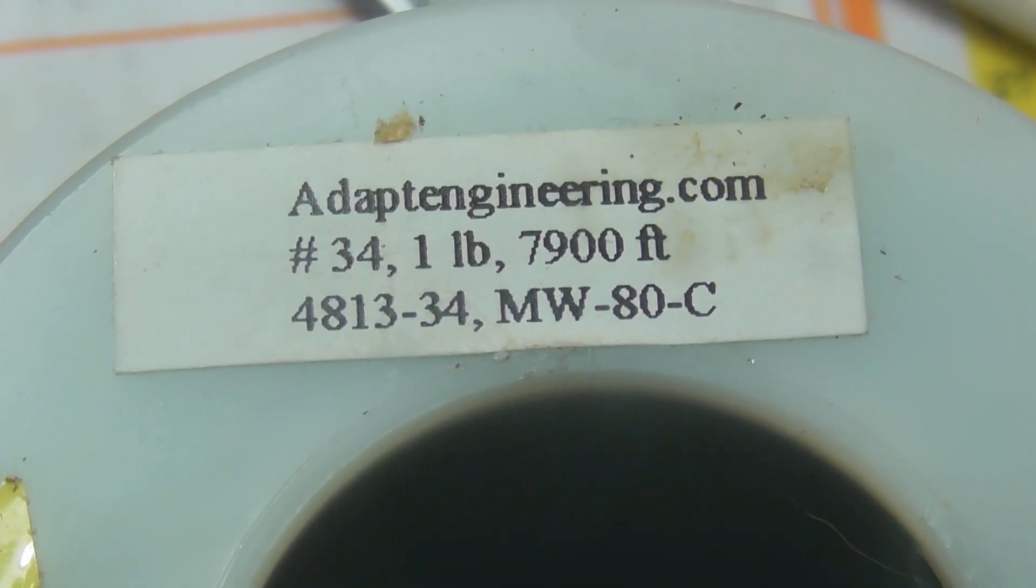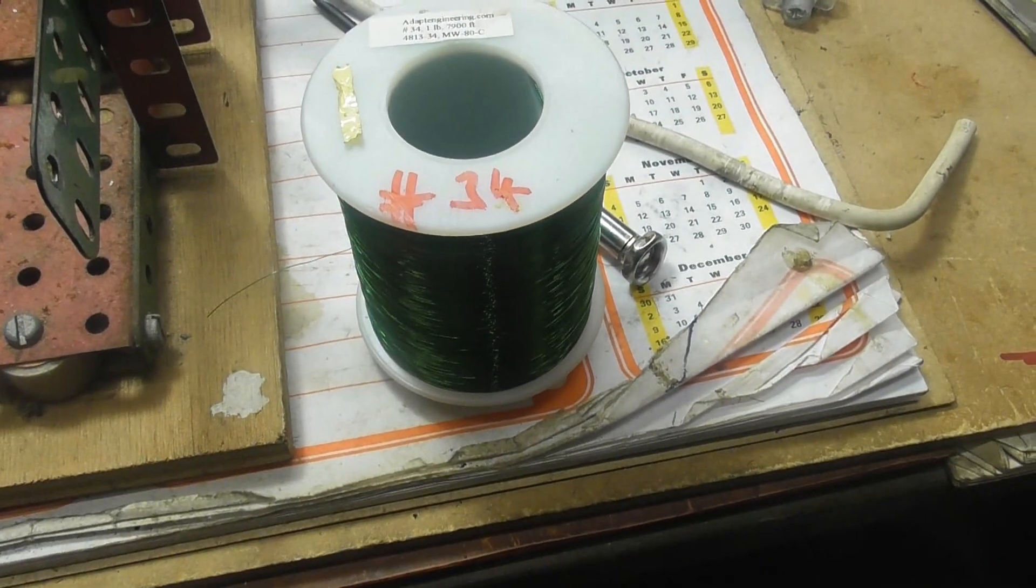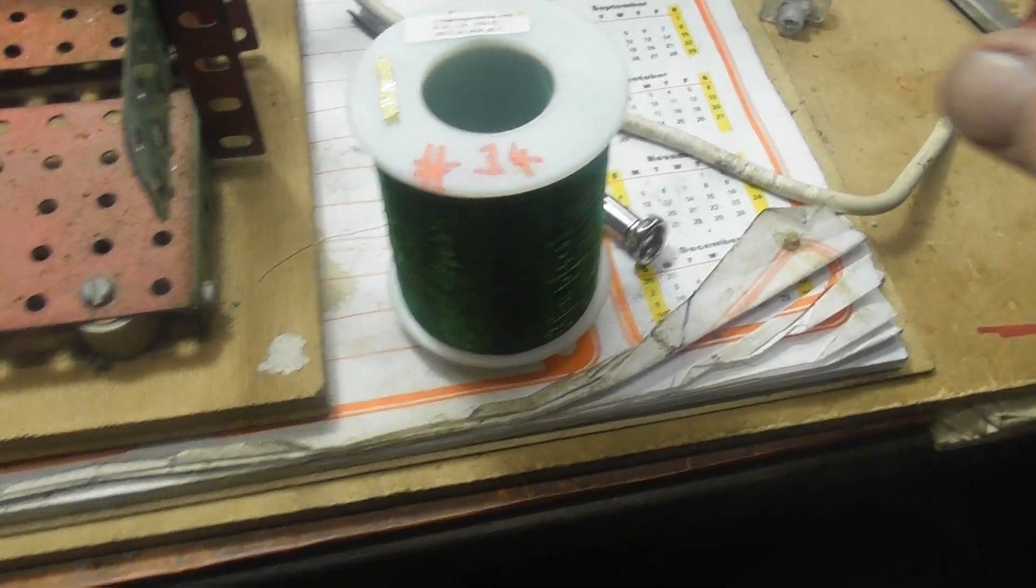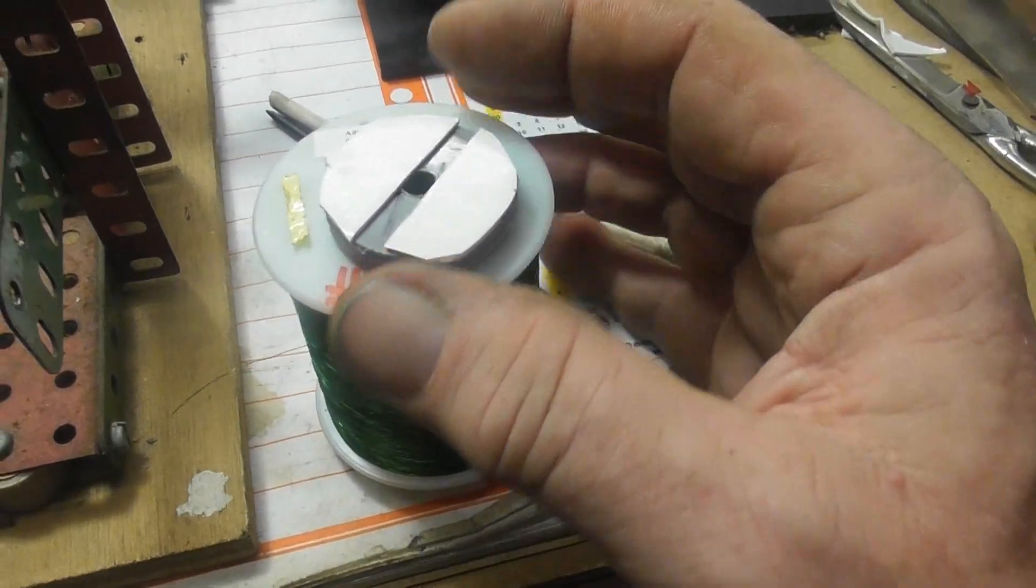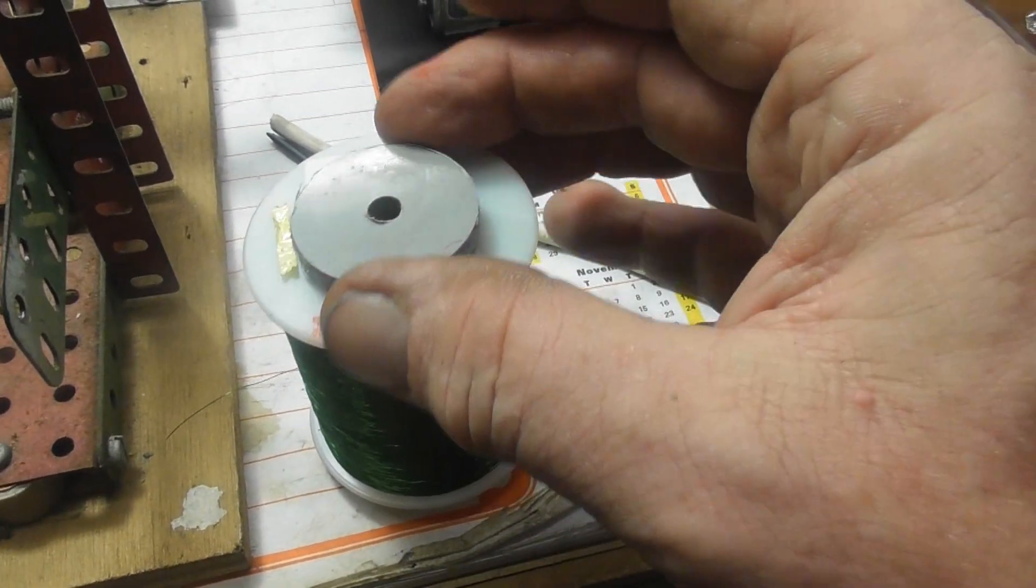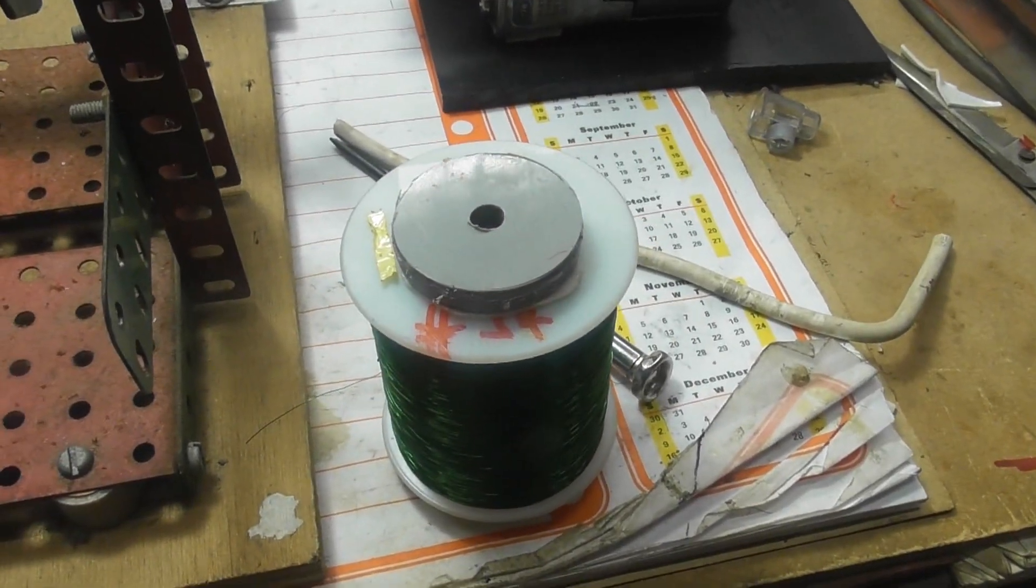That green wire is number 34 wire. Just modifying the wheel so it will fit on the shaft, so I made a couple of inserts with glue on the side so it doesn't bounce.